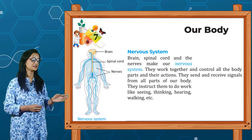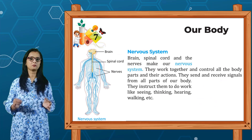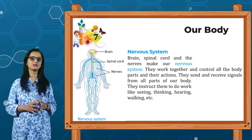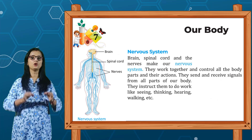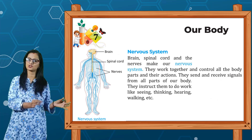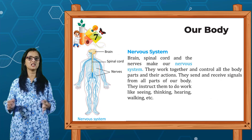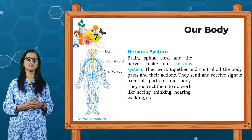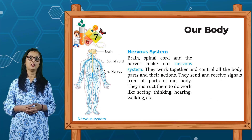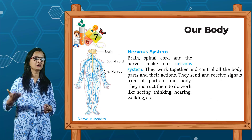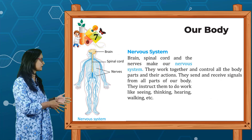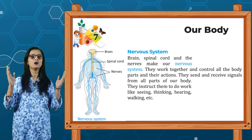Next is the nervous system. The brain, spinal cord and nerves make our nervous system. They work together and control all the body parts and their actions. They send and receive signals and instruct the body to do work like seeing, thinking, hearing and walking. As you can see in this picture, our body has a lot of nerves — this is the nervous system.